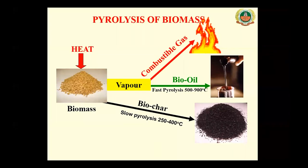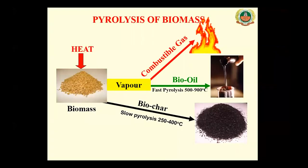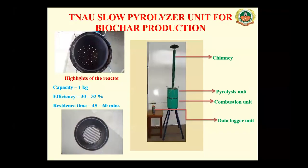The basic difference between biochar and charcoal: charcoal is used as a fuel directly, whereas when the charcoal is made into a powder and applied in the field, it is referred to as biochar. Both are produced by means of the pyrolysis process.